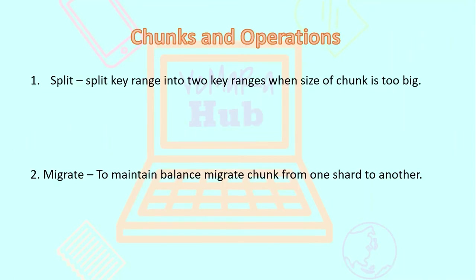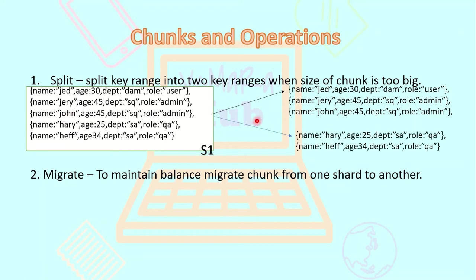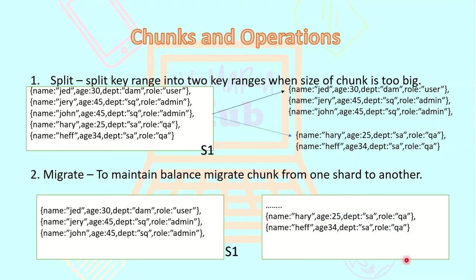In a sharded environment, each shard will contain chunks of around 100 MB in size. When a chunk grows, there is an automatic process of splitting the chunk into key ranges on the basis of your shard key. Once the data is split, it is migrated to another shard for load balancing by the balancer. For example, if a shard has documents and the chunk size is too big, it may take the midpoint of the shard key 'name' and split it accordingly.